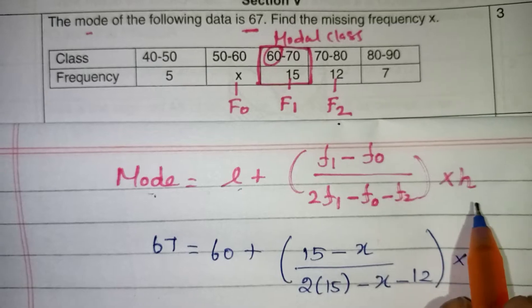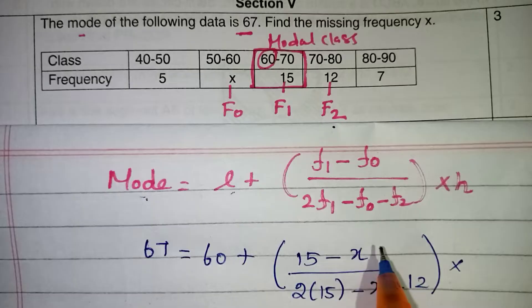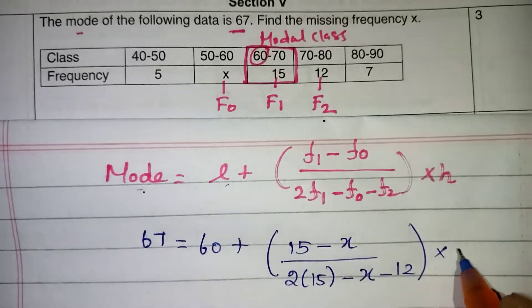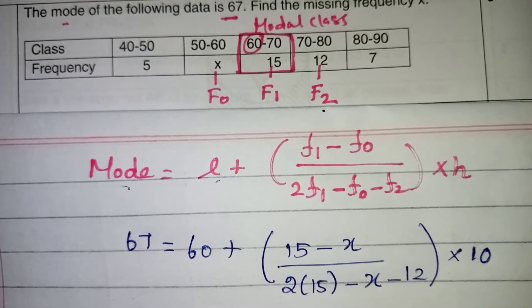Multiply by H is nothing but the size here. So 80 to 90, 70 to 80, the class size is 10 here. So we have to take the 10. The interval gap should be taken as H.